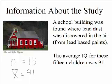So we've gone over a little bit of background. Now let's focus again on the actual study. Let's say we find a school building where lead dust was discovered in the air from those lead-based paints, and let's say that the average IQ for these 15 children that we learned about was 91. So our sample size is 15, and our sample mean is 91.